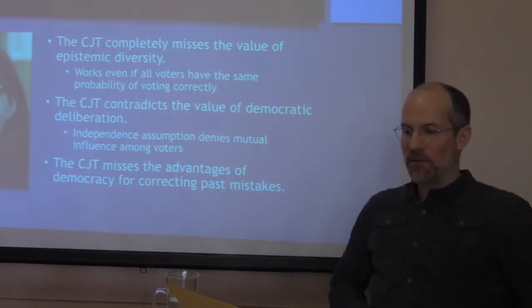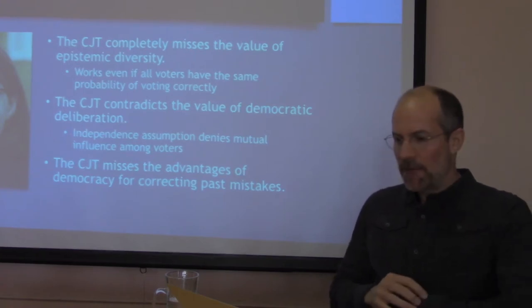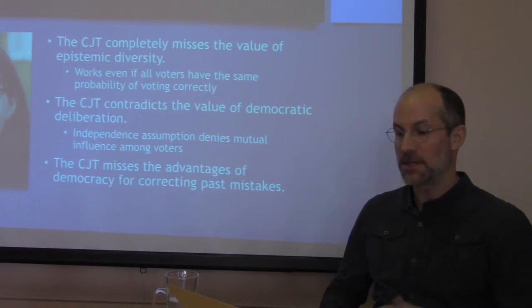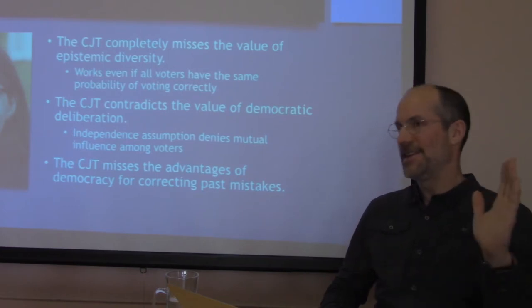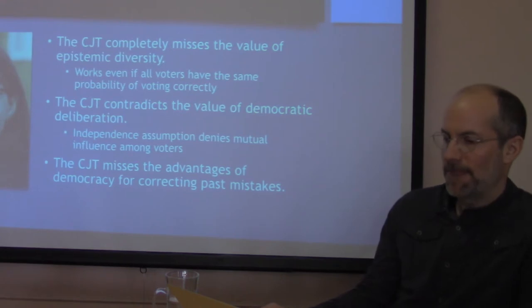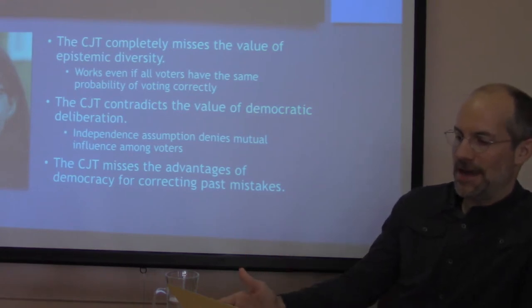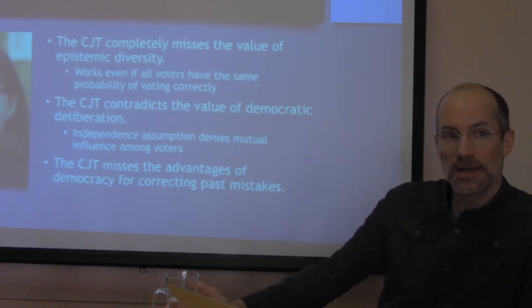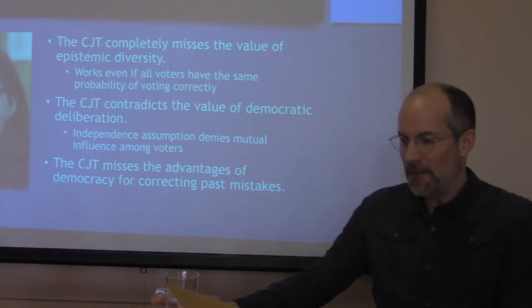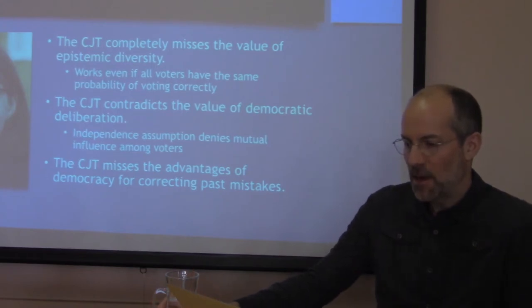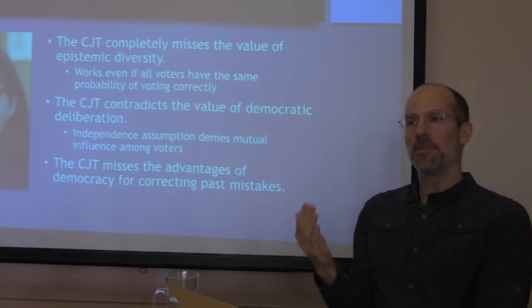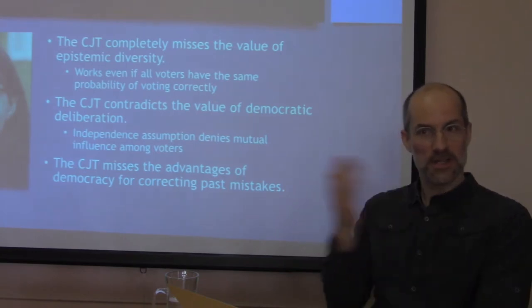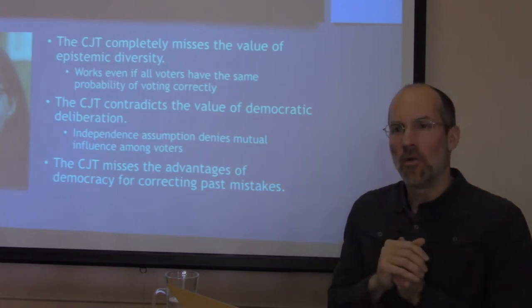I'm going to focus on Anderson's critique because she spends more time on the CJT than did Landemore, and I think brings out some important points, but is perhaps too quick to dismiss it. She has three complaints. One is that the CJT completely misses the value of epistemic diversity because the CJT works even if all voters have the same probability of voting correctly — as in the example I just gave, where they all had a two-thirds chance. She says this basically rules out epistemic diversity. Secondly, she says the CJT actually contradicts the value of democratic deliberation — it's only about voting. Assuming votes are independent denies the kind of mutual influence that happens when voters are deliberating. And then her final complaint is that the CJT misses the advantages of democracy for correcting past mistakes.